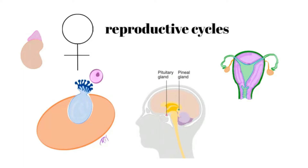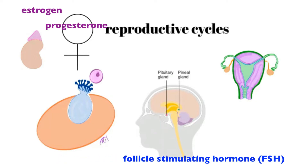A lot of this is dictated by hormones released from the ovaries: estrogen and progesterone. Estrogen is also released from the adrenal cortex, as is progesterone, and estrogen can also be released from fat cells. In addition, we have FSH (follicle stimulating hormone) and LH (luteinizing hormone), which are released from the pituitary gland — a pea-sized gland inferior to the hypothalamus that resides in the hypophyseal fossa of the sphenoid bone.